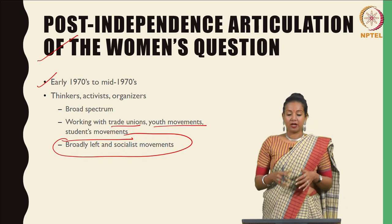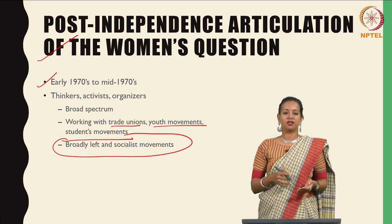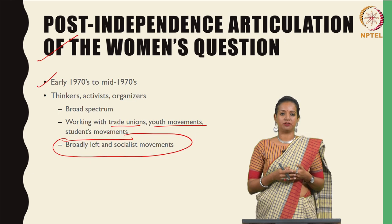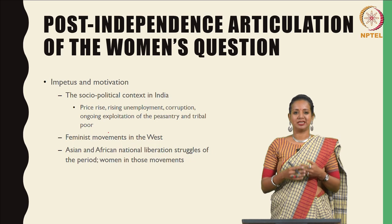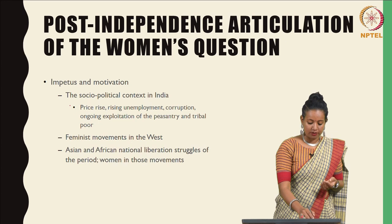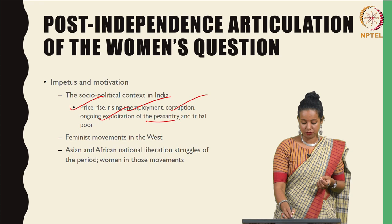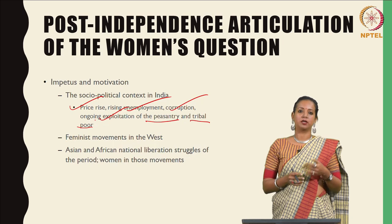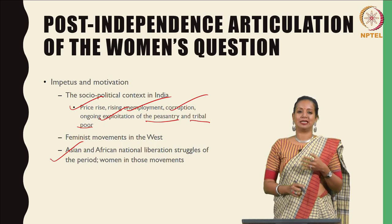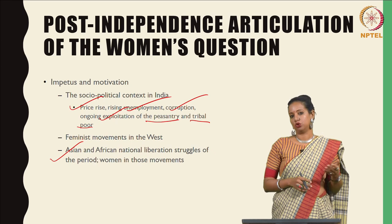Feminism in India was very much of a Marxist temper, taking into account the ways in which egalitarianism in society could not be guaranteed without subsequent egalitarianism for women. The impetus and motivation for these forms of intersectional thought were the current socio-political context of India: price rise, rising unemployment, corruption, and exploitation of the peasantry and the tribal poor. At the same time, women were inspired by feminist movements in the West, but also by Asian and African national liberation struggles of the period and women in those movements.